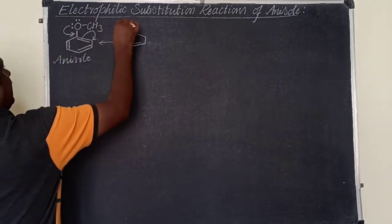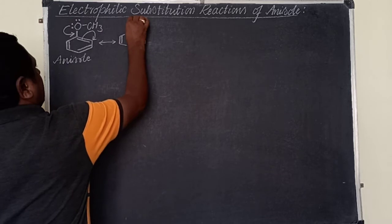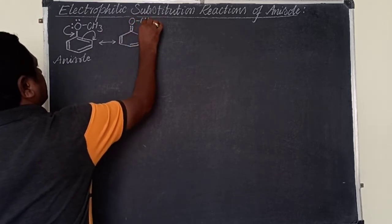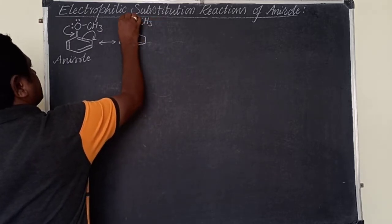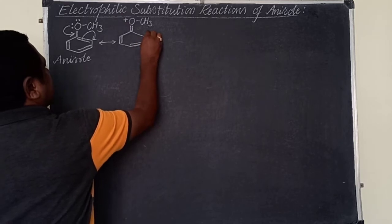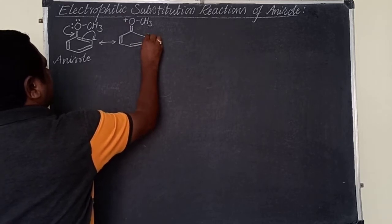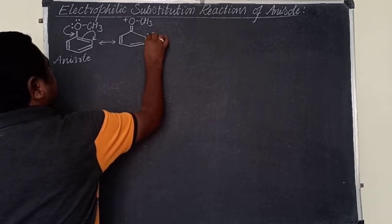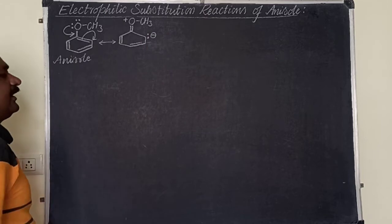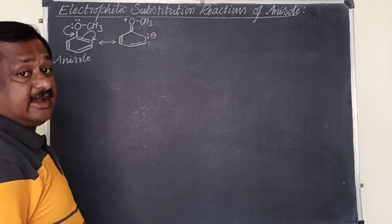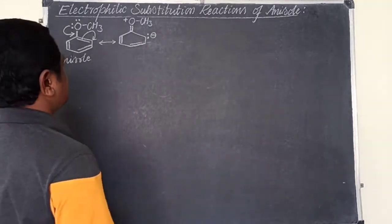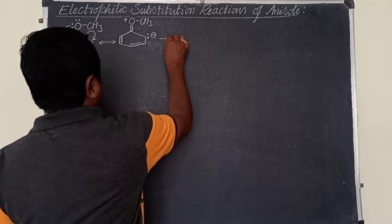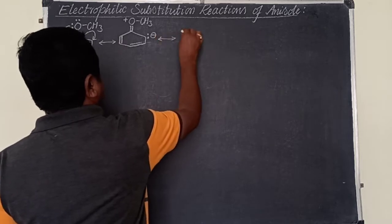Oxygen, by releasing electrons towards the benzene ring, develops a positive charge. Whereas the carbon atom of the benzene ring at the ortho position, by gaining the electron, develops a negative charge. In the new pi bond formed, we can get two more resonating structures.